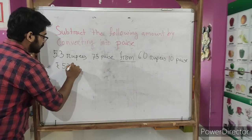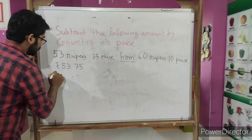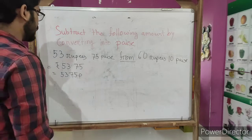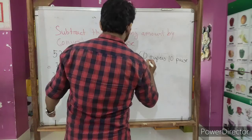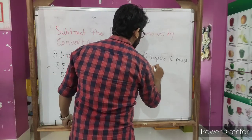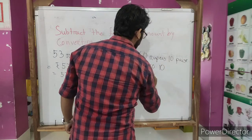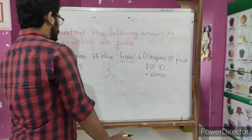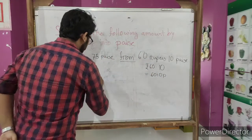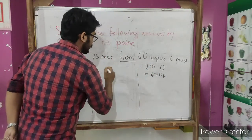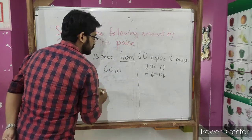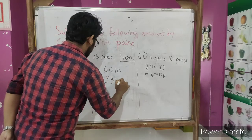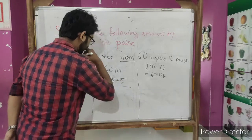So at first, 53 rupees 75 paise, so rupees 53.75 equals to 5375 paise. P means paise - P is a short form of paise. After that, rupees 60.10, that's 6010 paise. Now we need to subtract simply: 6010 minus 5375.